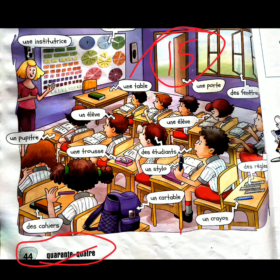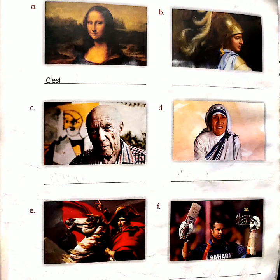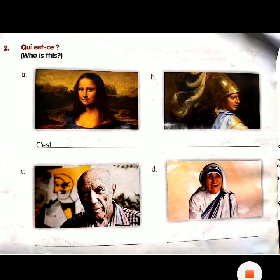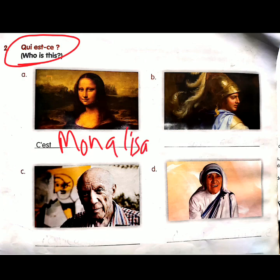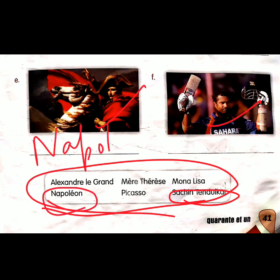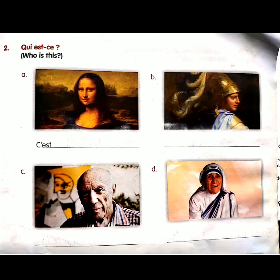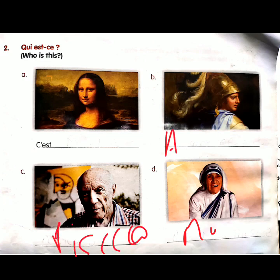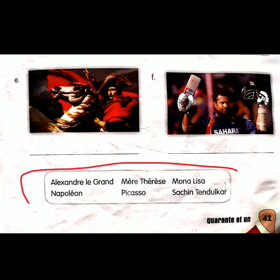And one more thing, students — in your chapter number 3, one exercise is left, the second exercise on page number 41. Here you have to identify who the person is. Options are given at the bottom of the page. This is Mona Lisa, this is Sachin Tendulkar, this is Napoleon, she is Mother Teresa, he is Picasso, and he is Alexander the Great. Write down the answers from the options given at the bottom of the page.